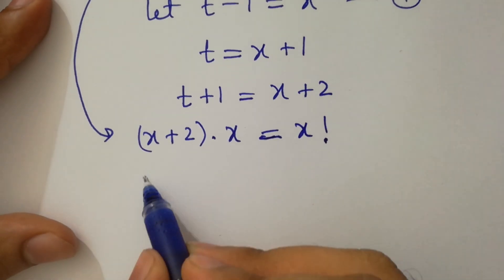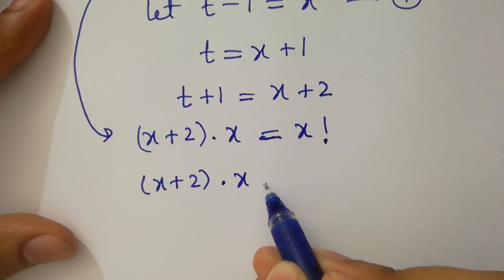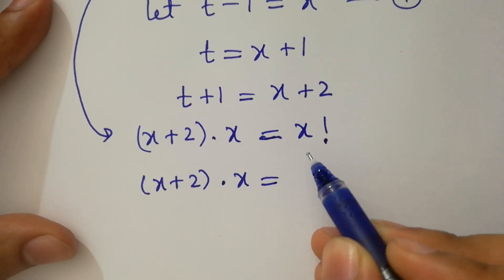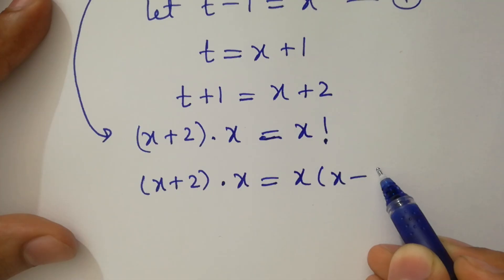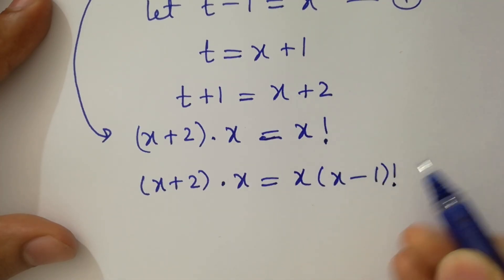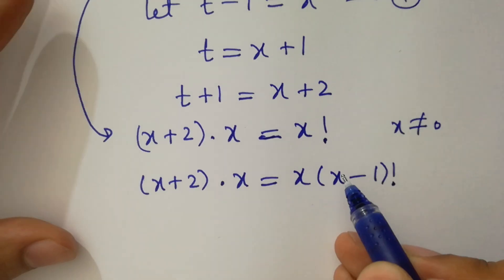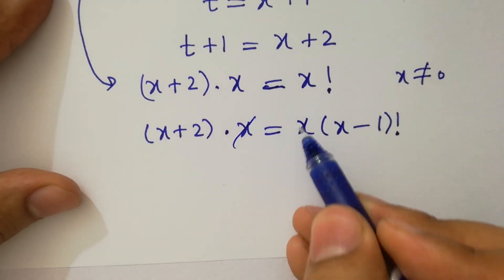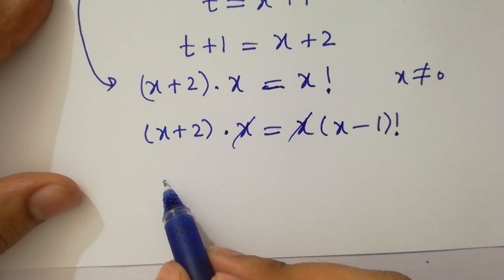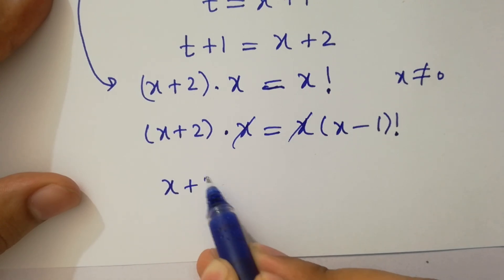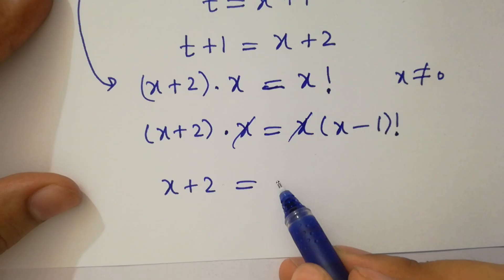So x plus 2 times x equals x factorial, which is x times (x-1) factorial. Since x does not equal 0, x cancels and we have x plus 2 equals (x-1) factorial.